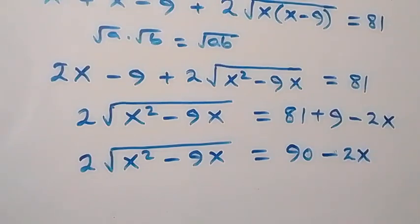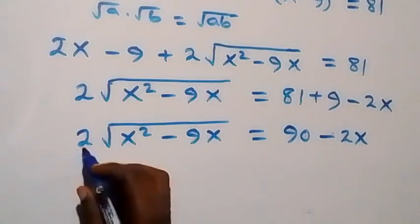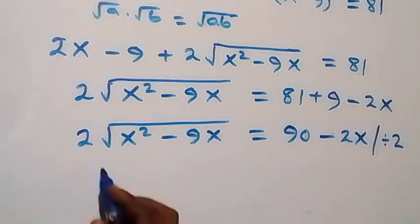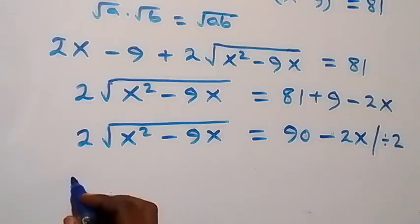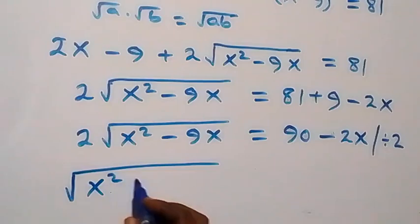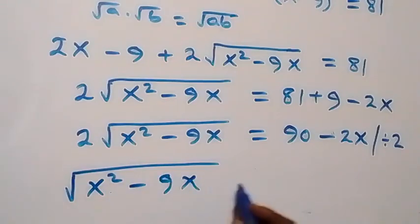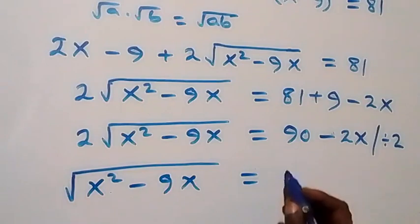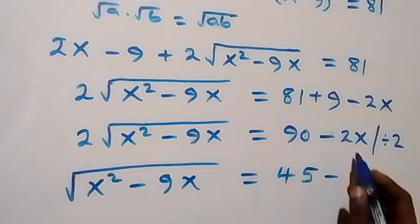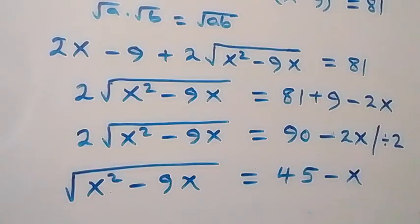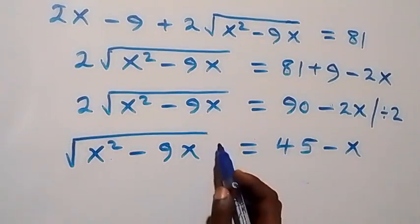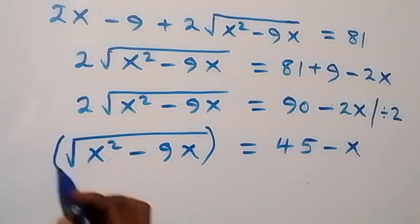Here, let's divide through by 2. We cancel out and are left with square root of (x squared minus 9x) equals to 90 divided by 2, that's 45, then minus 2x divided by 2, which is x. So square root of (x squared minus 9x) equals 45 minus x. Now we can square both sides again.